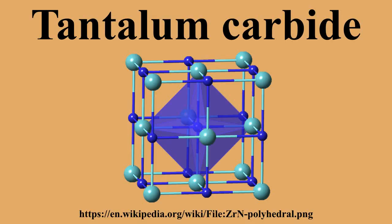The bonding between tantalum and carbon atoms in tantalum carbides is a complex mixture of ionic, metallic, and covalent contributions. Because of the strong covalent component, these carbides are very hard and brittle materials. For example, TaC has a microhardness of 1,600 to 2,000 kilograms per square millimeter and an elastic modulus of 285 gigapascals, whereas the corresponding values for tantalum are 110 kilograms per square millimeter and 186 gigapascals. The hardness, yield stress, and shear stress increase with the carbon content in TaCx.